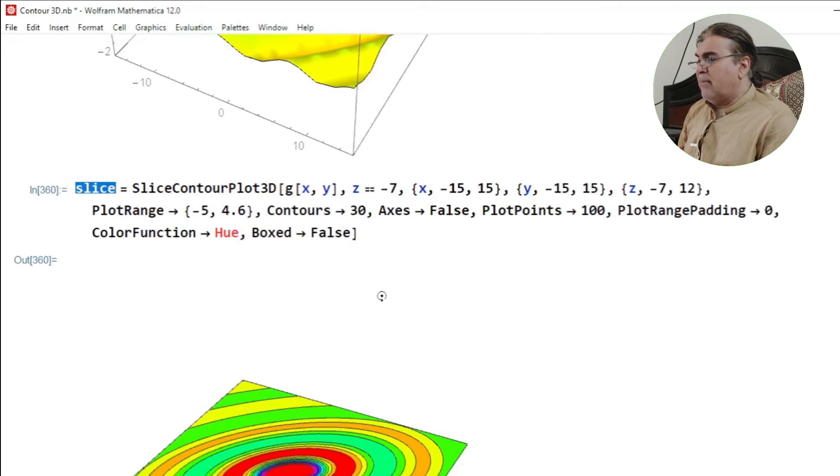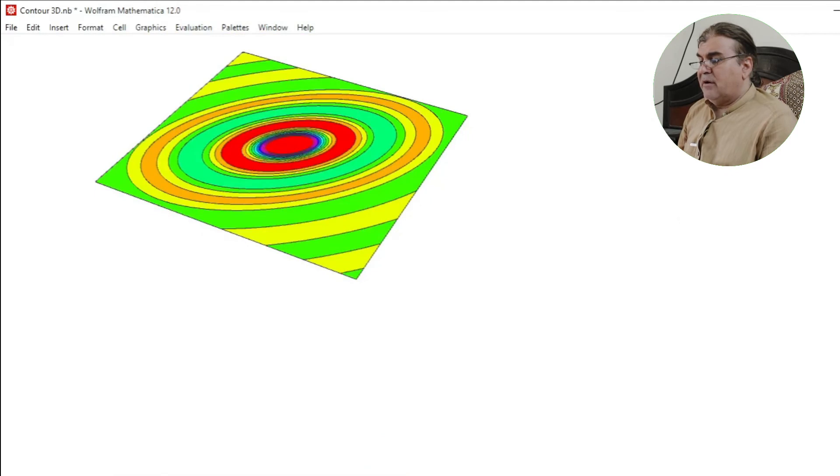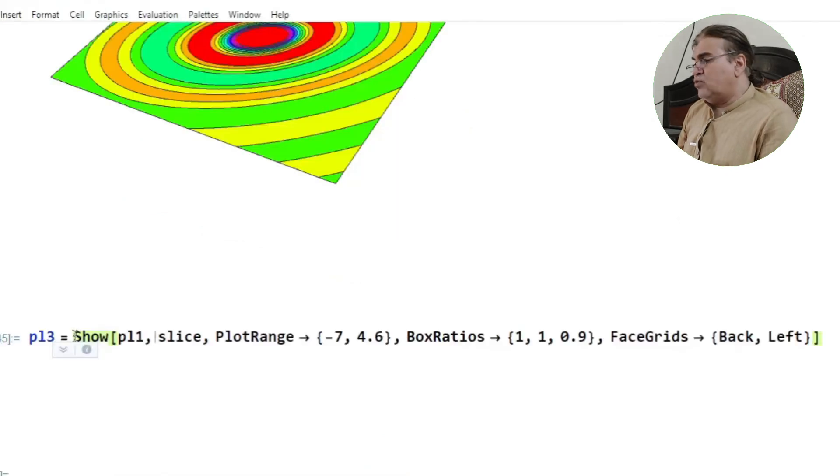Now I want to combine these two figures through another Mathematica command. I combine the two plots through the Show command by putting inside the argument of Show command pl1 and slice, and then again I give PlotRange, BoxRatio, and FaceGrid, etc.